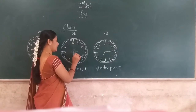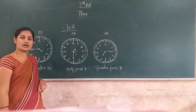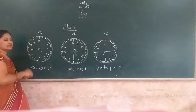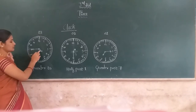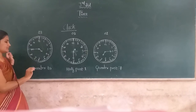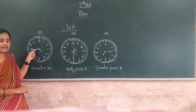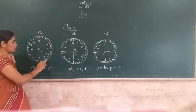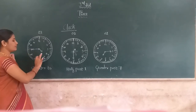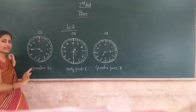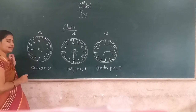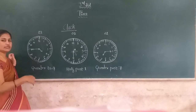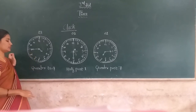Then the third clock — the minute hand is at 9 and the hour hand is at 4. There is a small shift in reading this time. When the minute hand is at 9, we say quarter to the next number. So the hour hand is at 4 — we say quarter to 4. Exactly it is 3:45, but we read the time as quarter to 4.